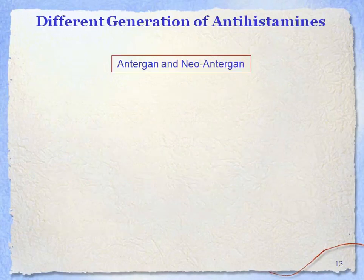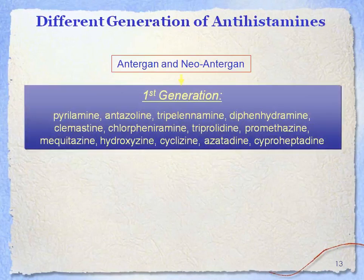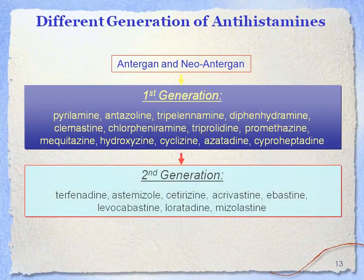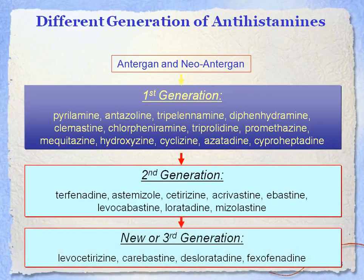Different generations of antihistamines with examples: first generation includes pyrilamine, antazoline, etc. Second generation includes terfenadine, astemizole, cetirizine, etc. Third generation (new or third generation) includes levocetirizine, fexofenadine, etc.